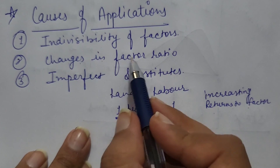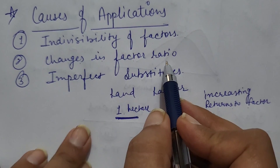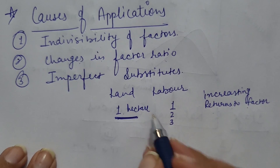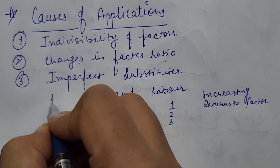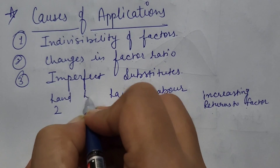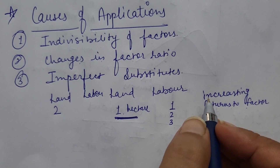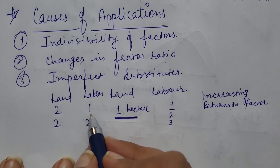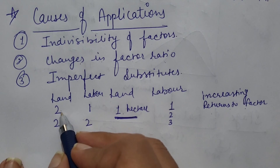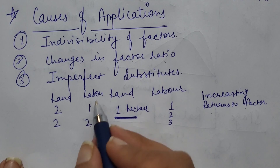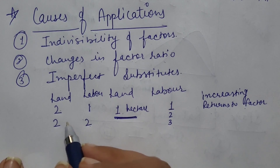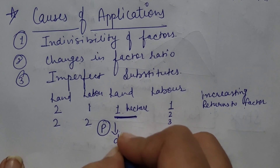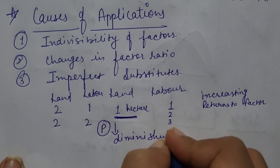The second cause is changes in factor ratio. When there is a change in the factor ratio, it is responsible for decreasing returns to factor. Suppose we have 2 hectares of land and one laborer employed. If we increase the laborers, then previously one laborer had 2 hectares of land to work on, but now per laborer, land available is only 1 hectare. As a result, product will fall, leading to diminishing returns to a factor.